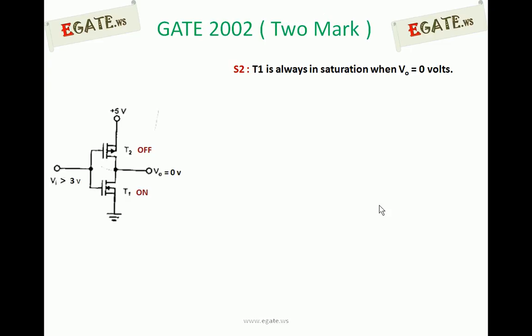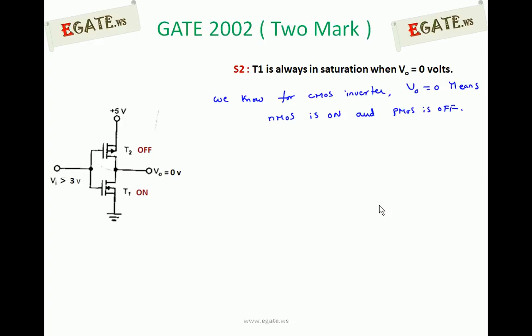Now consider Statement 2: T1 is always in saturation when V0 equals 0 volts. T1 is the NMOS transistor. For a CMOS inverter, V0 equals 0 volts means PMOS is OFF and NMOS is ON. NMOS is ON and PMOS is OFF so no current flows, and this point is shorted to ground, making V0 equal to 0 volts.